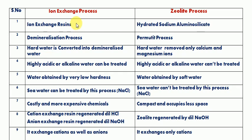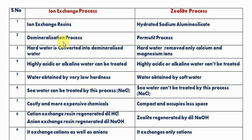We use the ion exchange process with cationic resins, and the permutit process. The zeolite process uses hydrated sodium aluminum silicate as ion exchange material. The ion exchange process is also called the demineralization process.